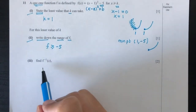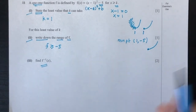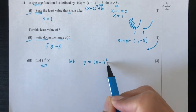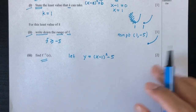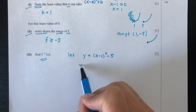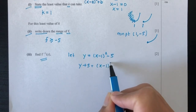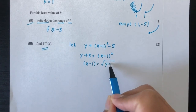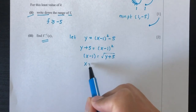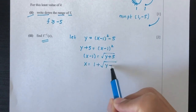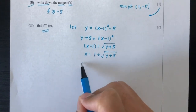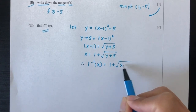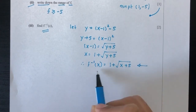Part 3: find the inverse function. Let y = (x−1)² − 5. Rearranging: y + 5 = (x−1)², so x − 1 = √(y+5), giving x = 1 + √(y+5). Therefore f⁻¹(x) = 1 + √(x+5).